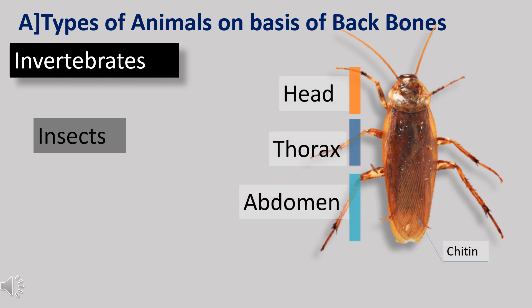Animals that do not have a backbone are called invertebrates. For example, insects such as cockroaches, mosquito, and beetles do not have a backbone. They have six legs. Their body is divided into three parts: head, thorax and abdomen. The body of an insect is covered by a hard material called chitin.